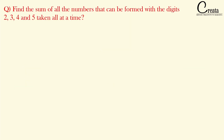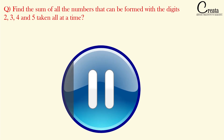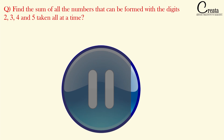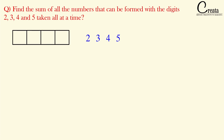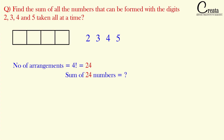Let's move to the next question: Find the sum of all the numbers that can be formed with the digits 2, 3, 4, and 5, taken all at a time. We have 4 digits and 4 slots, so we can form a total of 4 factorial arrangements, which equals 24 different numbers. We need to find the sum of all these 24 numbers.